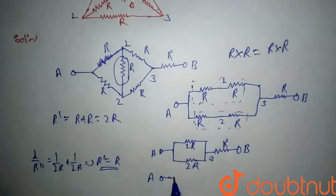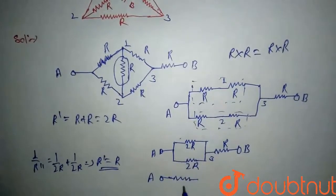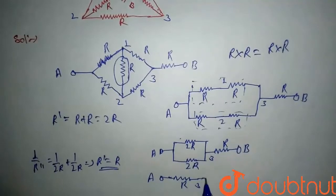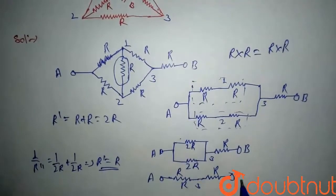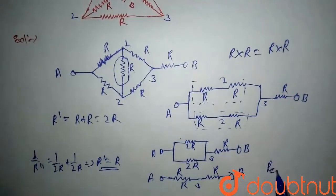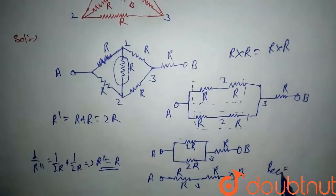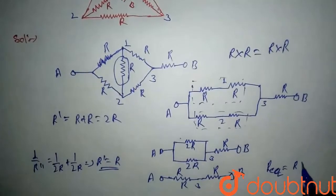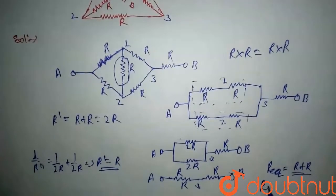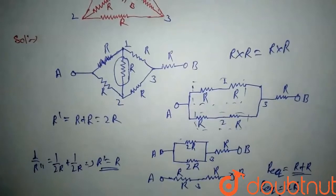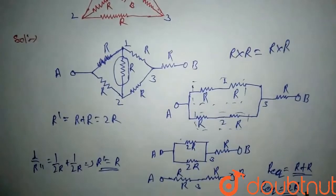Now from A, this parallel combination gives R, and we still have the resistance R between point three and B. These two are in series, so R_equivalent equals R plus R, which gives R_equivalent equals 2R. This is our final answer.